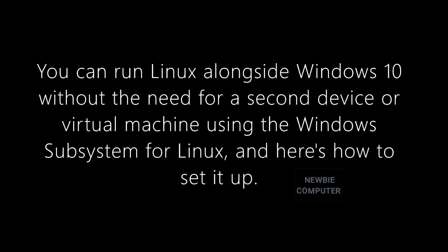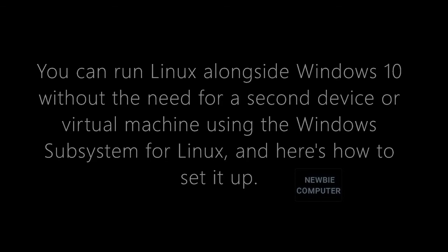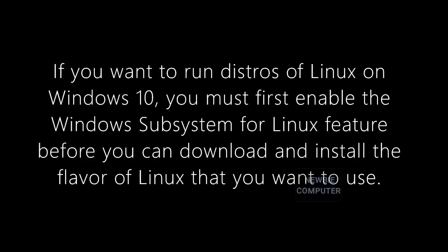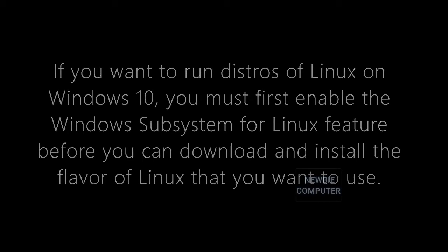You can run Linux alongside Windows 10 without the need for a second device or virtual machine using the Windows Subsystem for Linux. Here's how to set it up. If you want to run distros of Linux on Windows 10, you must first enable the Windows Subsystem for Linux feature before you can download and install the flavor of Linux that you want to use.